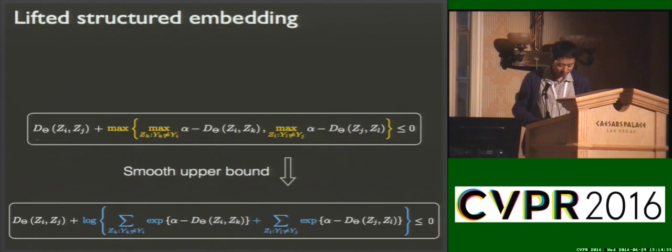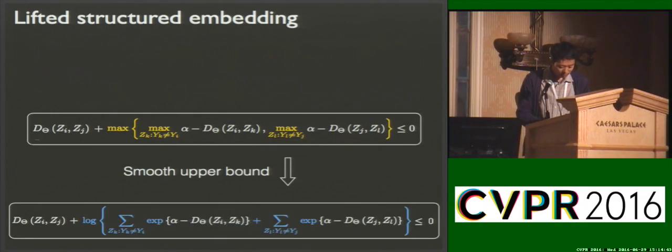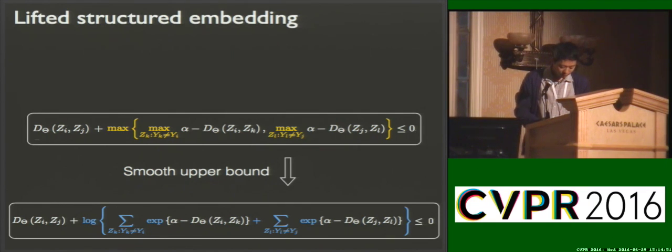Our optimization problem is hard to enforce: the positive distance should be less than the harder of the two hardest negative distances plus a margin alpha. However, this is hard to optimize directly and often converges to bad local optima. So we instead optimize the smooth upper bound, which is smooth and differentiable everywhere with respect to the distances d_theta.